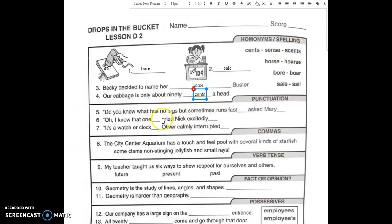Punctuation. When you use quotation marks to show that someone is talking, you have to use punctuation a little bit differently. So I am going to draw in your punctuation. Do you know what has no legs but sometimes runs fast? You need a question mark here and close the quotation marks. The beginning is here. The end is here. Asked Mary. Period.